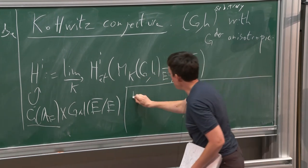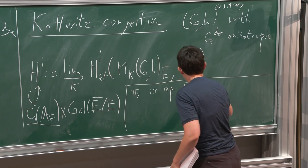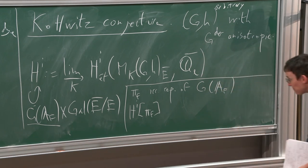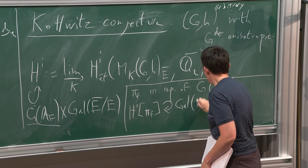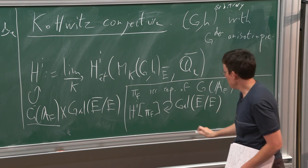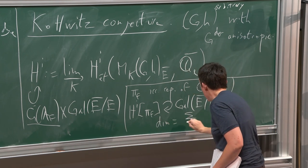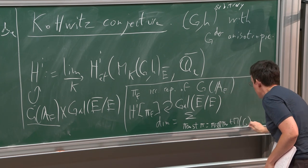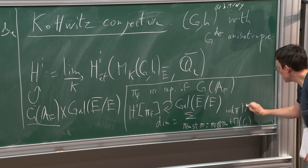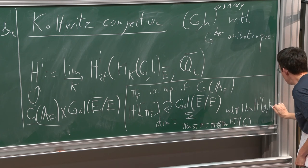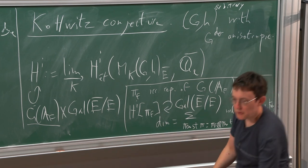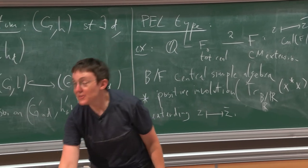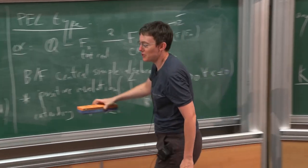Let's take π_f, an irreducible representation of G(A_f). We can look at the π_f-isotypical component in each H^i. This is a representation of Gal(E-bar/E), and we know its dimension by Matsushima's formula: it's a sum over all π_∞ such that π_f ⊗ π_∞ is automorphic, of the multiplicity of that automorphic representation times the dimension of the (g,K)-cohomology of π_∞. The question is: what is the action of the Galois group? The Kottwitz conjecture is an answer to that.